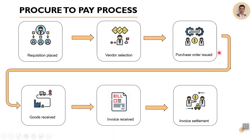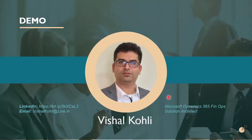Once all the related steps for purchase order creation are completed, we go and receive the goods against that purchase order and we also receive the invoice for it. Finally, when the payment is made to the supplier, we will do the invoice settlement. This covers the whole procure to pay process.